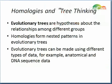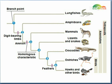Evolutionary trees are hypotheses about the relationships among different groups. Homologies form a nested pattern in an evolutionary tree, showing what's common between different organisms branching off from a similar or common ancestor. We use anatomical data or DNA sequencing data to construct these evolutionary trees. This shows the beginning of a phylogenetic tree, where we have a branching off point with different structures, and a homologous characteristic shared between the two branches.